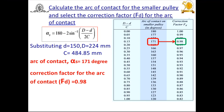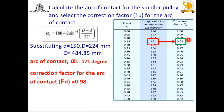Next, we calculate the arc of contact for the smaller pulley and select correction factor FD. Using the equation: angle = 180° − 2 sin⁻¹((D − d) / 2C), with D = 224, d = 150, C = 484.85, we get an angle of wrap of 171°. From the correction factor table, for an arc of contact of 171° on the smaller pulley, FD = 0.98.